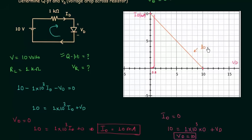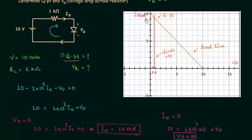This is the load line and this is the diode response. We can easily find the Q point — the operating point — at their intersection. From the graph, Vd is equal to 0.8V and Id is equal to 9.2 milliamps. So the coordinates for the operating point, Idq and Vdq, are 9.2 mA and 0.8V respectively.